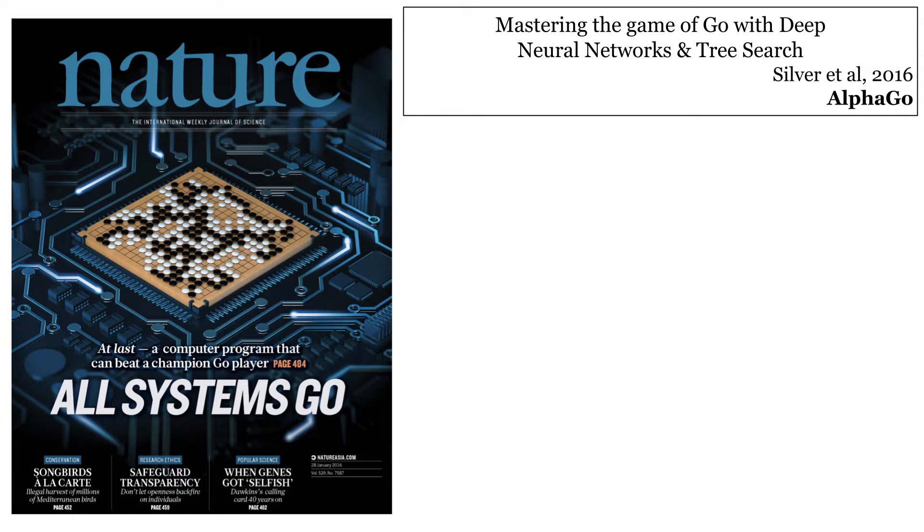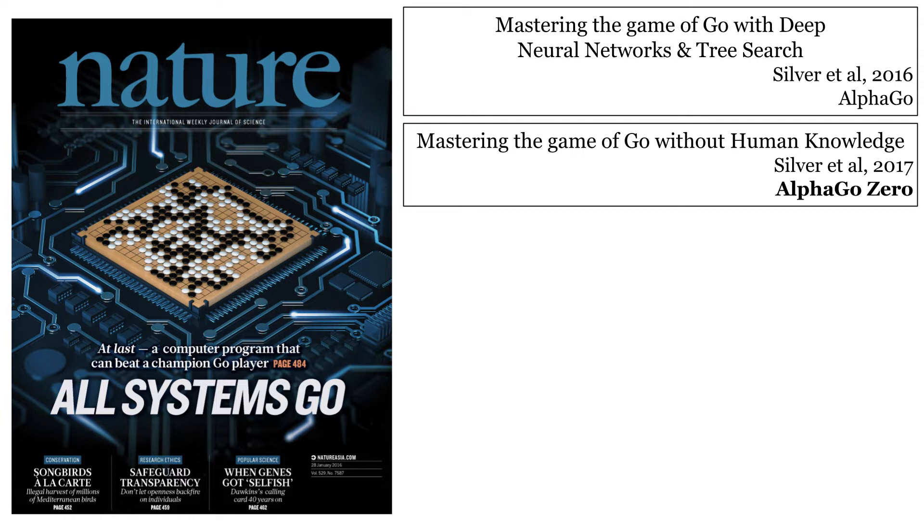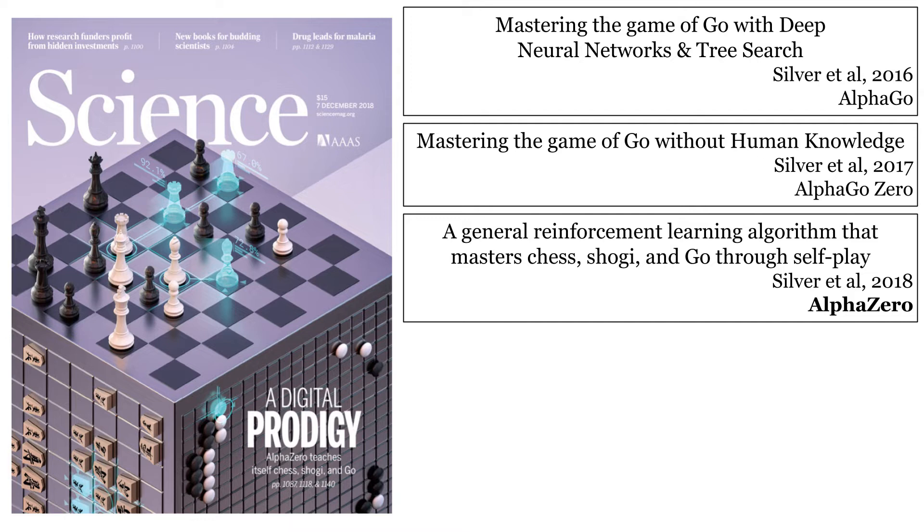The next year, DeepMind showed the algorithm behind AlphaGo was able to learn the rules and strategy of Go by only playing against itself. It did not require a corpus of expert human play or Go-specific tuning. In 2018, a more general version of this algorithm, called AlphaZero, was able to obtain superhuman levels of play for two more classical board games, Shogi and Chess.